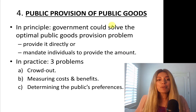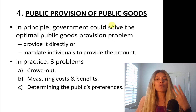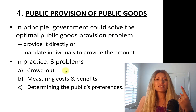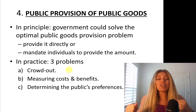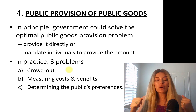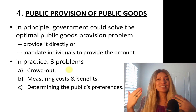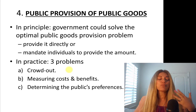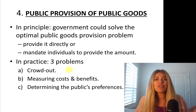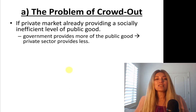In practice, there are three problems of public provision of public goods. Number one: crowding out — this happens when the good is already being provided by private parties. The second is measuring costs and benefits of public goods, which will be covered in the next chapter on cost-benefit analysis. The third is determining the public's preferences — what do people want.